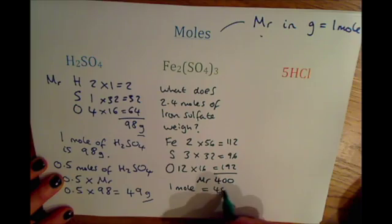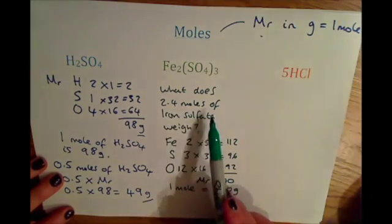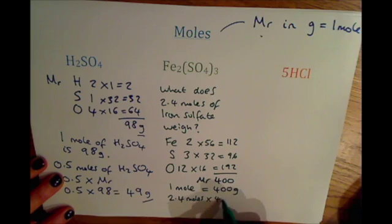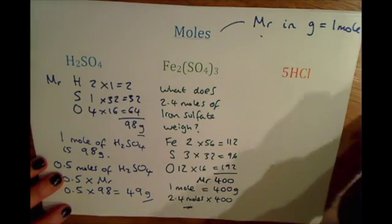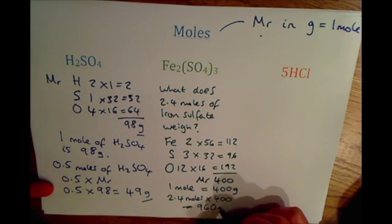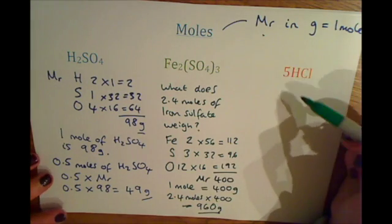In the question, we've been asked what 2.4 moles is worth, so we do 2.4 moles times by 400. And we do that calculation on our calculator, we get 2.4 times by 400, which is 960 grams. And just to show you how to relate this to when you're balancing equations: